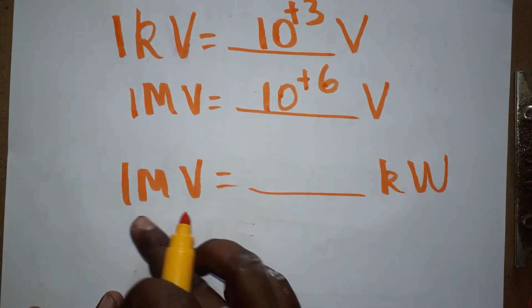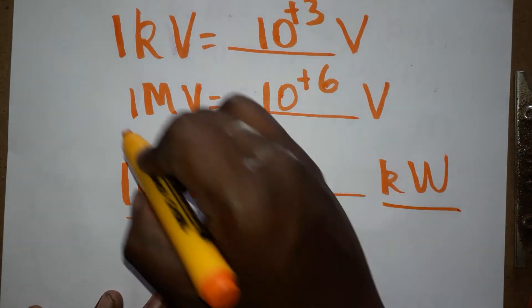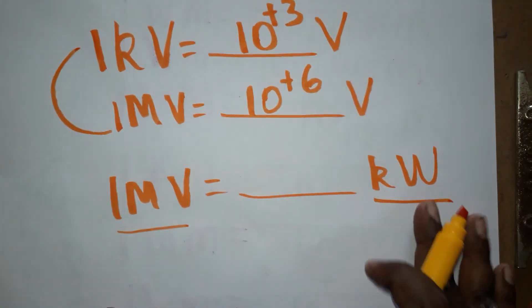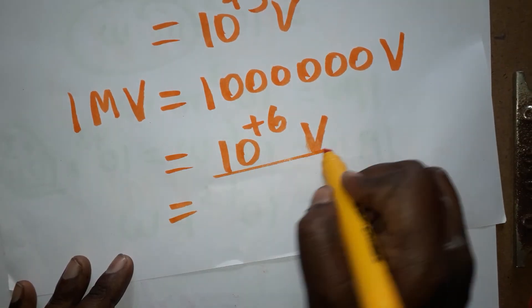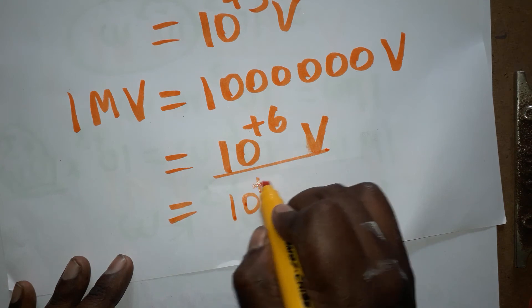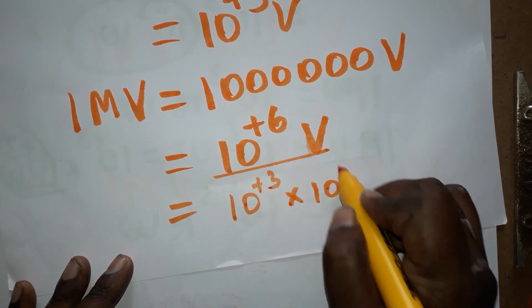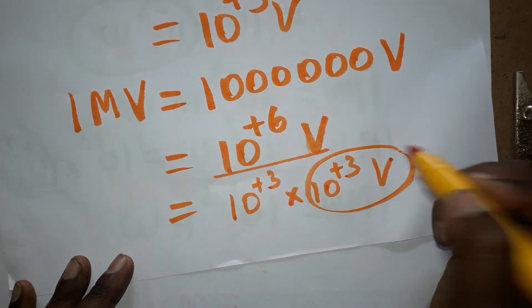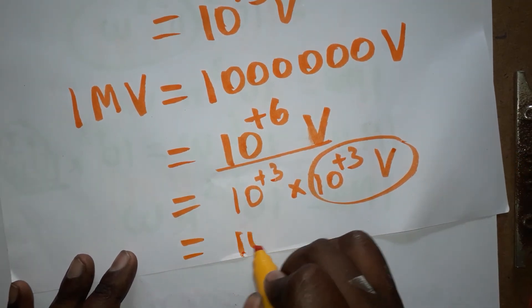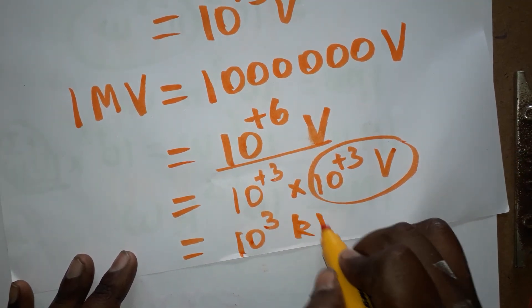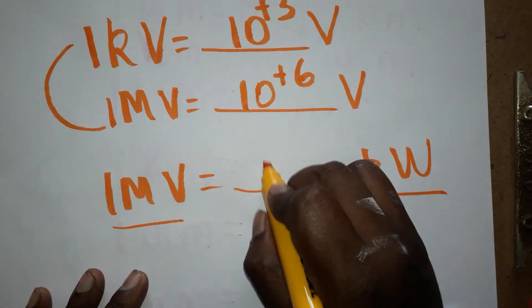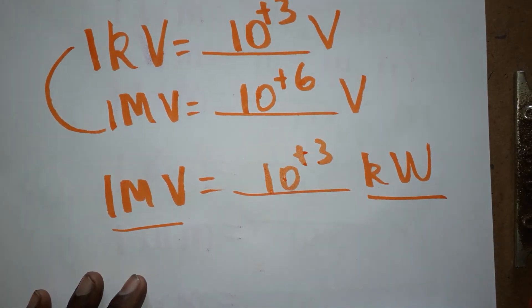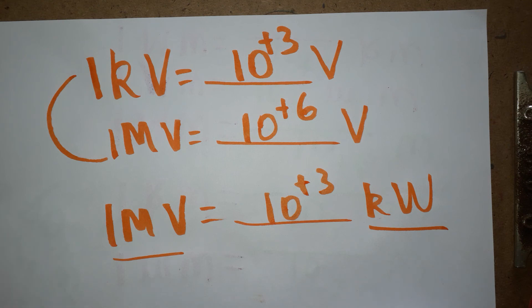Now the next relation: one megavolt is equal to how many kilovolts? One megavolt is 10 to the power 6 volts. We can write that as 10 to the power plus 3 multiplied by 10 to the power plus 3 volts. Since 10 to the power plus 3 volts equals one kilovolt, one megavolt is 10 to the power plus 3 kilovolts.